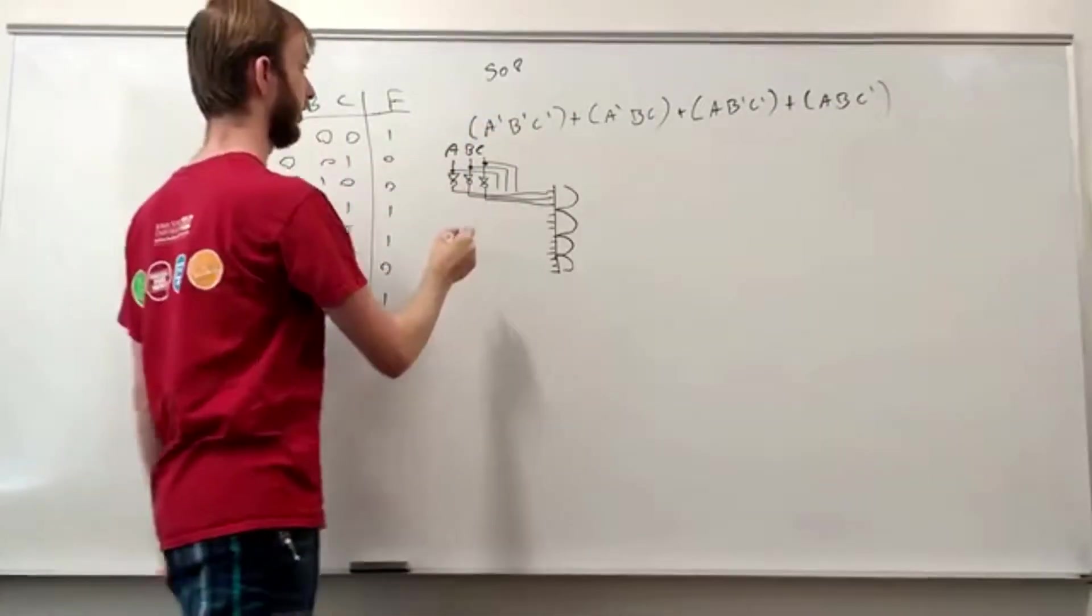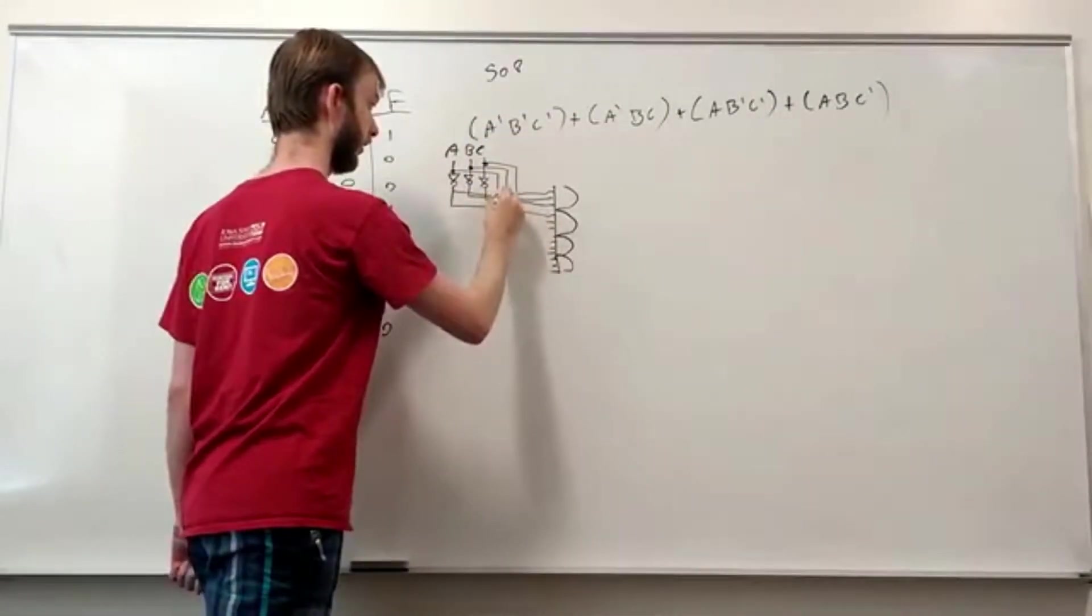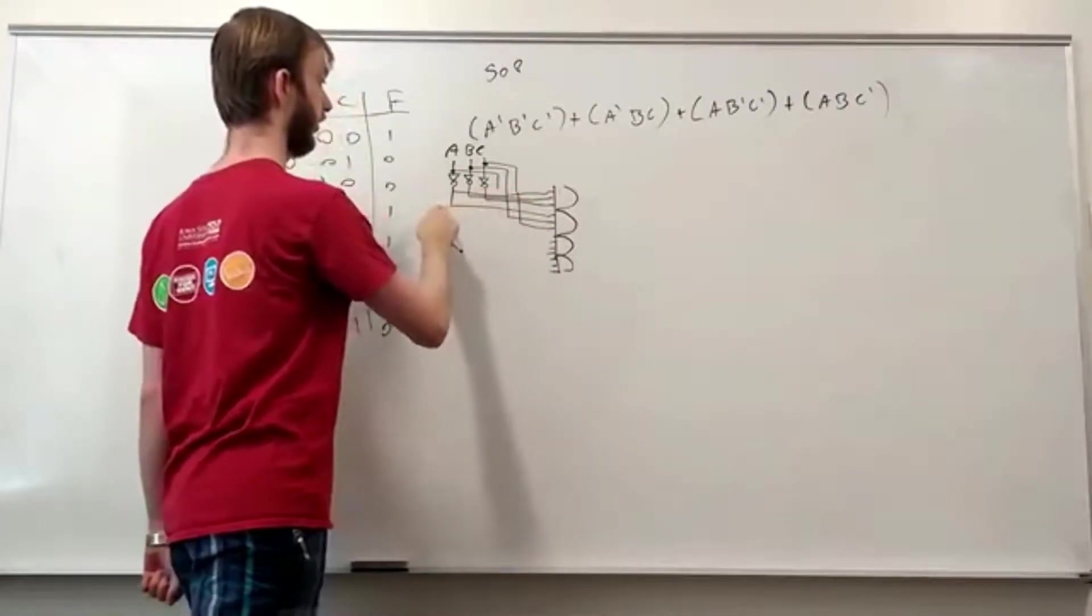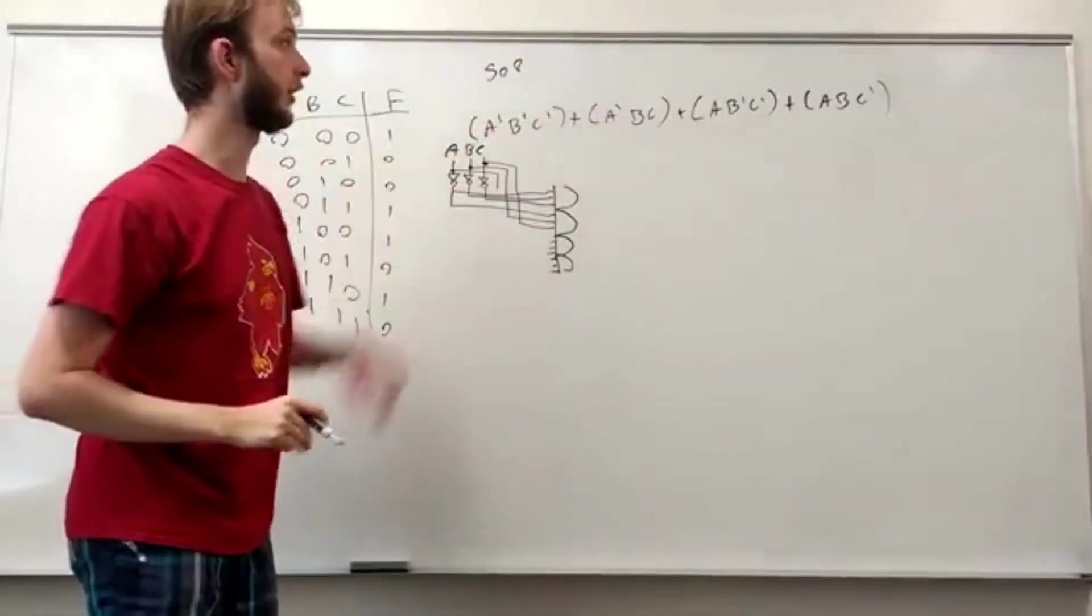Next one. B and C are not inverted. The A is. So A not, B, C. So we chose to pull from this bus for A and this bus for B and C.